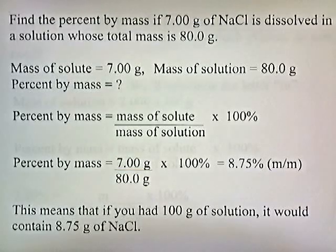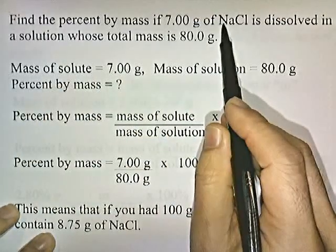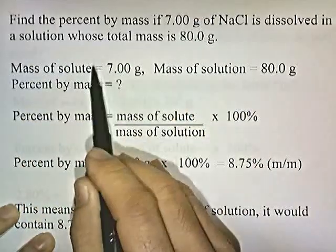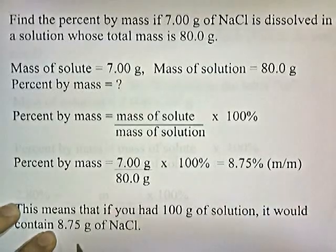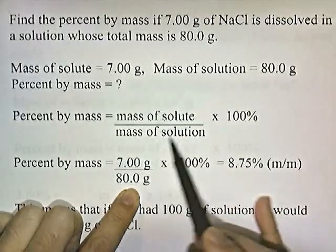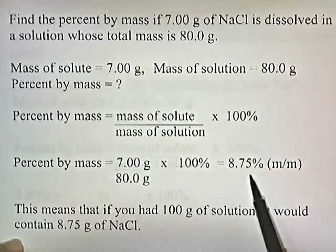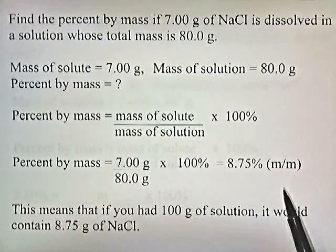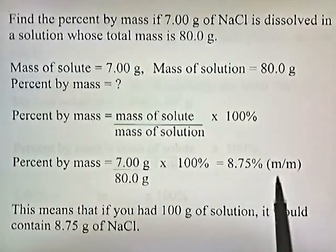Find the percent by mass if 7 grams of NaCl is dissolved in a solution whose total mass is 80 grams. We're solving for percent by mass. The mass of the solute is 7 grams, and the total mass of the solution is 80 grams. So: 7 divided by 80 times 100 gives you 8.75% by mass. The notation M/M means percent by mass. This means that if you had 100 grams of this solution, it would contain 8.75 grams of NaCl.